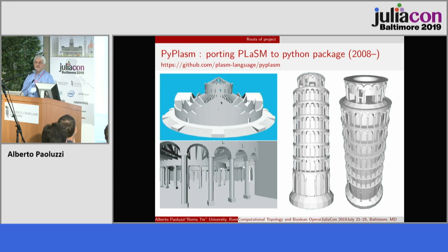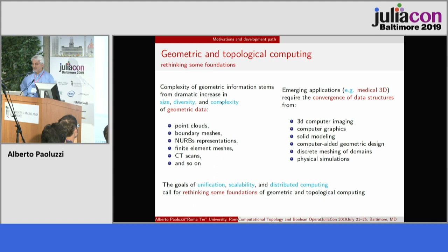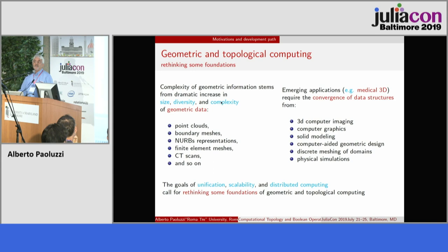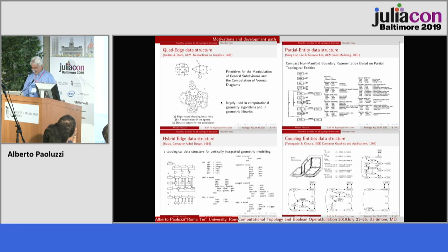We are now bringing our knowledge in geometric modeling to Julia, making some particular choices. I believe there is a dramatic increase in diversity and complexity of geometric data — with point clouds, meshes, boundary and nurbs representations, and a lot of other techniques. Recent applications, in particular medical 3D, require the convergence of data structures, because systems should interoperate with knowledge from different domains. So we need to rethink some foundations of geometric and topological computing.